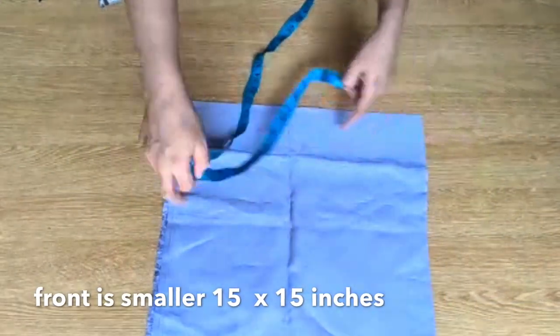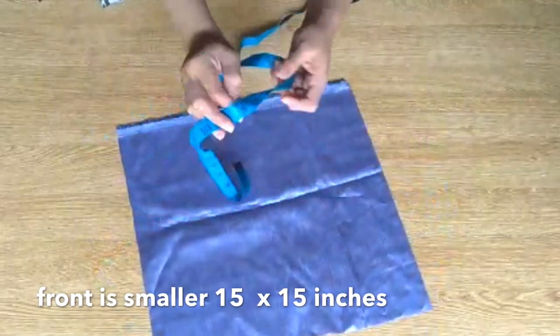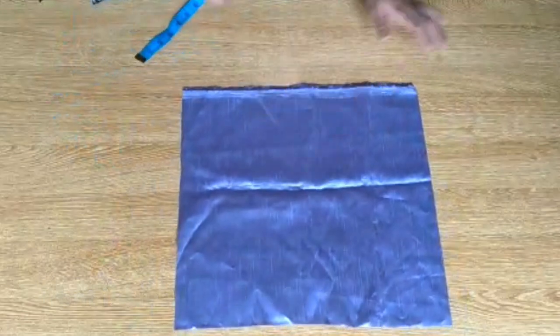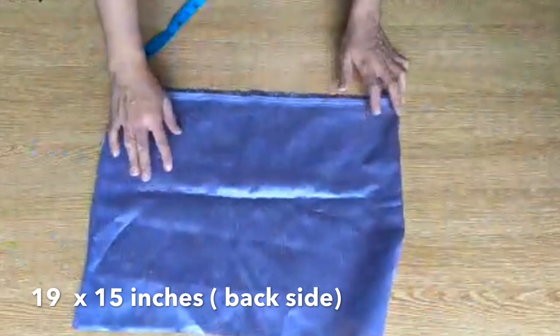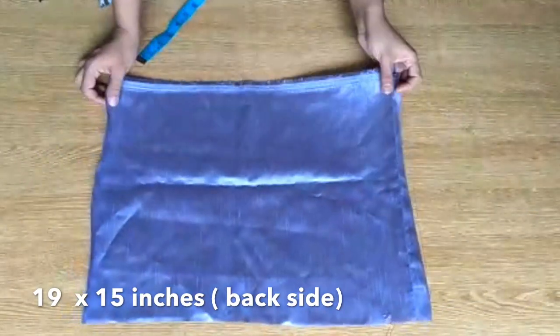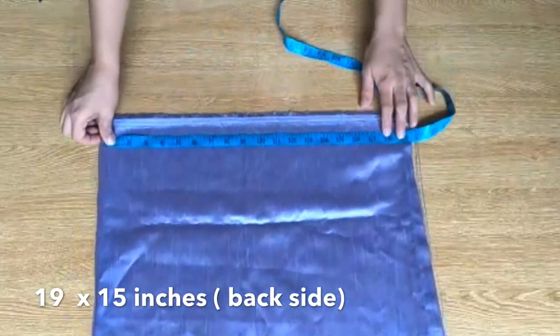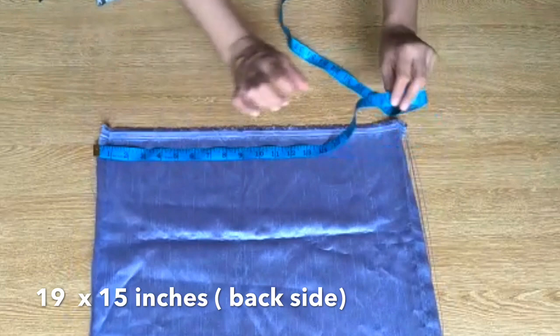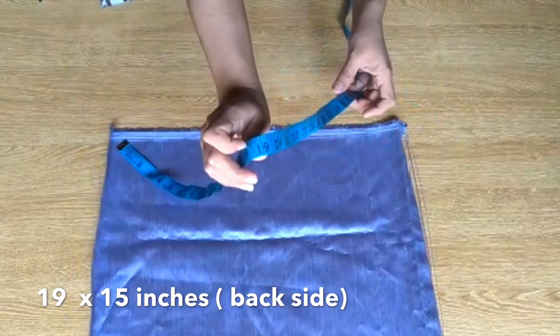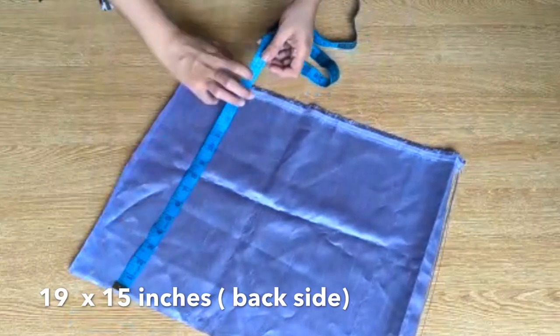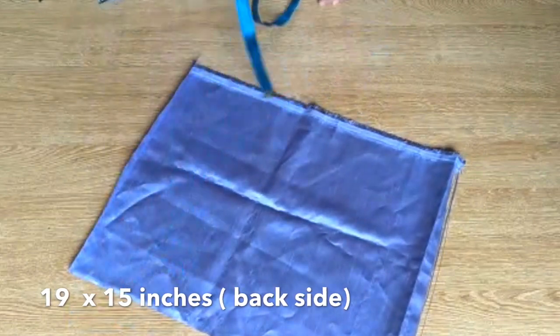Friends, I have told you the front side is a bit smaller. So it is 15 by 15. If we see the back side of the cushion, as you can see it will be a little bigger because we will fold it. So it is 19 by 15. So 4 inches are more added in the back side of the cushion cover.